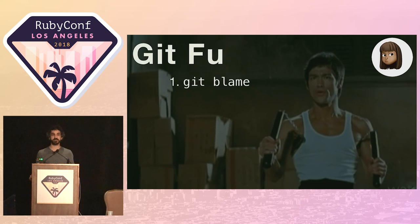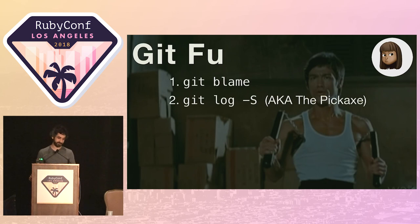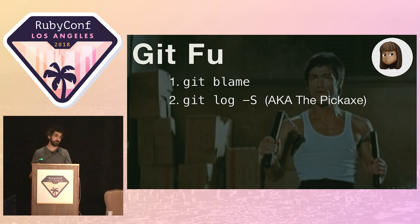Unperturbed, Seema cracks her knuckles and prepares to use a more advanced Git-Fu technique. Time to break out the pickaxe. Git log minus capital S, also known as the pickaxe, allows us to search through commit histories and find all the commits that contain a particular snippet of code. Seema's going to use the pickaxe to find the very first commit that introduced the sorted_patients method.